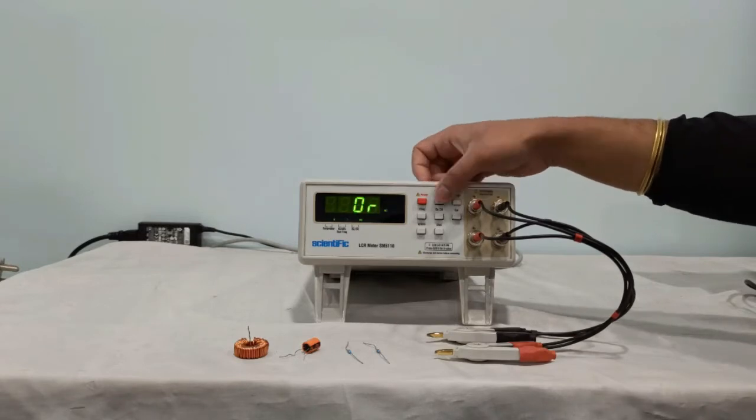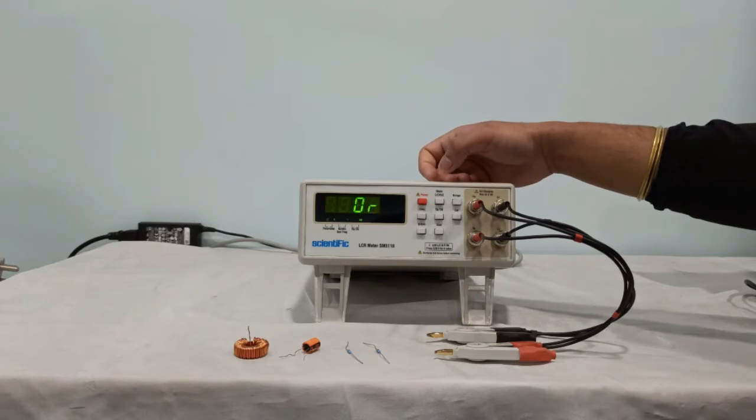Next is Z, that is impedance mode. We have to press this switch once again, so now this is impedance mode. This is how you can switch the mode from inductance to resistance to impedance.